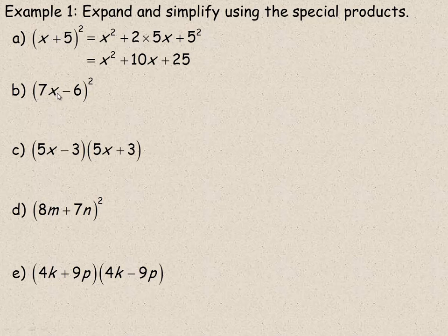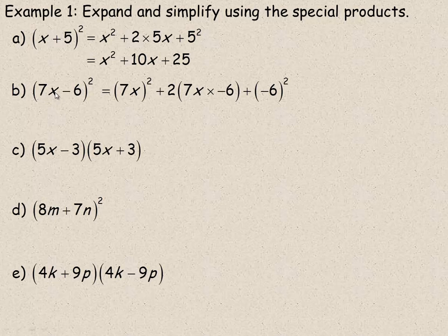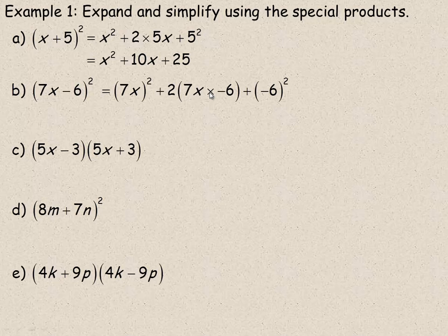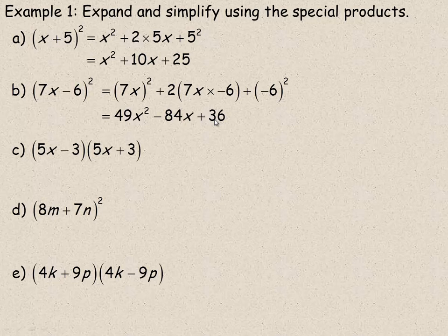The second one — same idea, we're squaring a binomial again. We start with 7x squared. On the end, we have negative 6 squared. In the middle, it's 2 times the product of these two terms: 7x times negative 6. So 7x squared gives 49x squared. Negative 6 squared is 36 — remember, that's a negative times negative, that's why it's positive. And 7x times negative 6 is negative 42x, doubled is negative 84x in the middle.